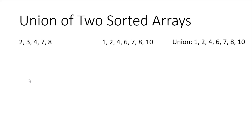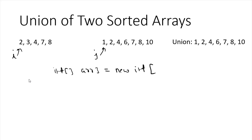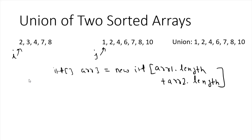Since both arrays are sorted, we can use two pointer approach. I will take one i variable for array 1 and one j variable for array 2, and I will take one new array — let's call it array 3. The size of array 3 will be array 1 length plus array 2 length, because in the worst case all elements can be unique across both arrays.